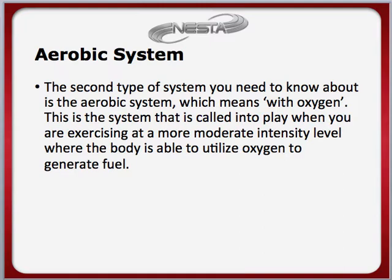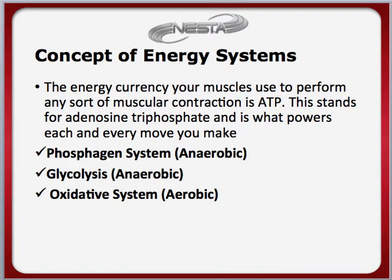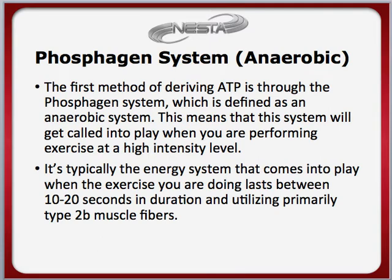Now let's get into some detail about the three different ways fuel, or ATP, can be derived. It's important to note that the energy currency your muscles use to perform any sort of muscular contraction is ATP, which stands for adenosine triphosphate — it's what powers each and every move you make. How your body gets ATP depends on the situation at hand. It will depend on your phosphagen system, which is anaerobic; your glycolysis system, also anaerobic; and your oxidative system, which is aerobic. We talked about this in previous modules, but we're going to dive a little bit deeper so you can see how it works in regards to work periods.